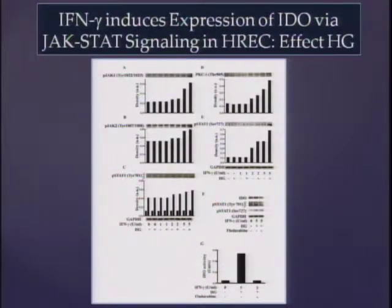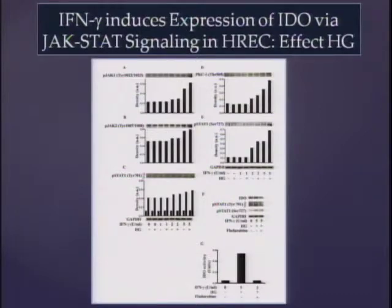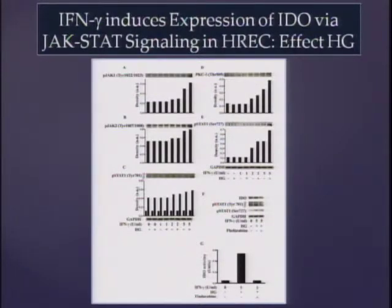To dissect the pathway and confirm whether this is due to JAK-STAT signaling — indeed, when you add interferon gamma to retinal endothelial cells, you have activation of the JAK-STAT pathway, and you can inhibit that pathway with a STAT inhibitor, which completely prevents activation of IDO. This clearly confirms that IDO activation occurs through this signaling pathway.